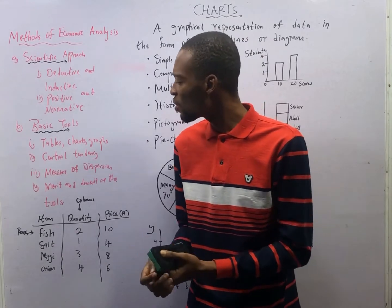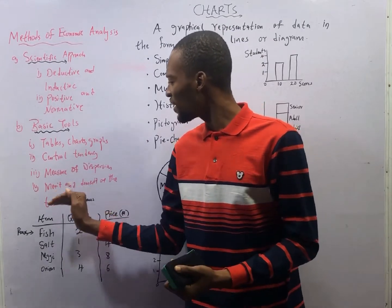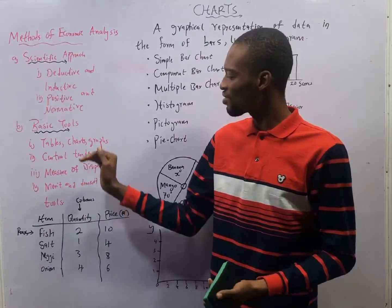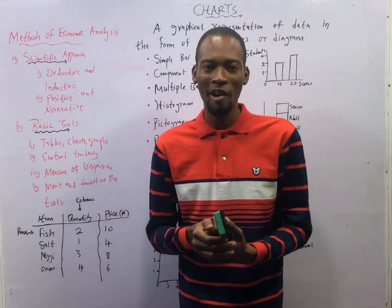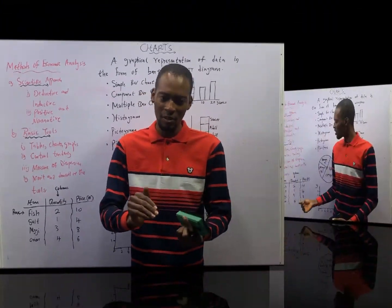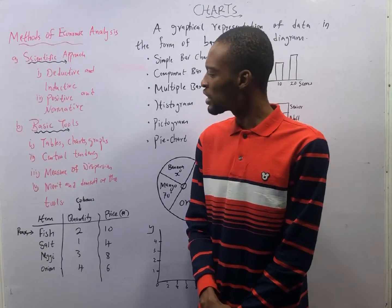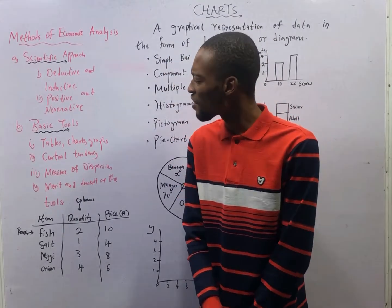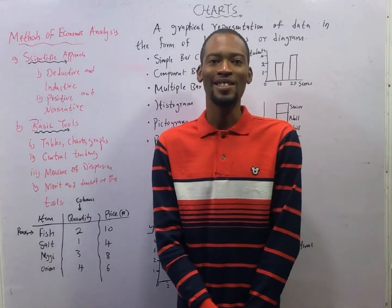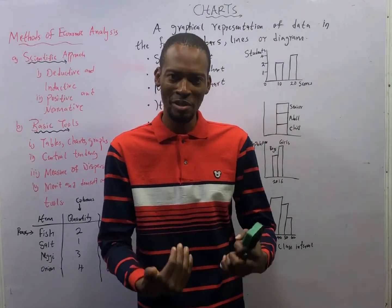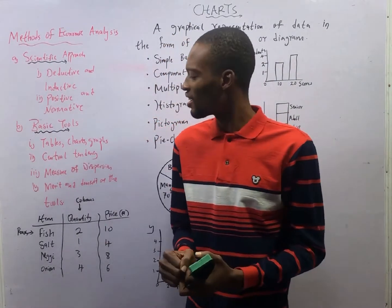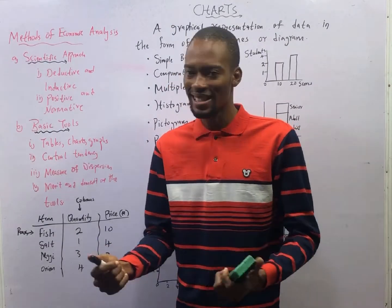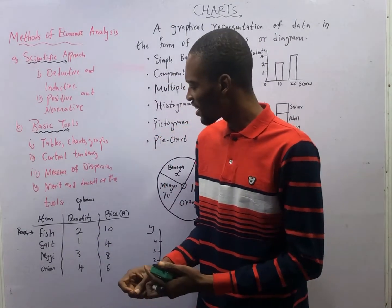We also need to know the advantages and disadvantages of these measures of central tendency and dispersion. Today, we shall be taking a look at charts, tables, and graphs as tools used in economic analysis. What are tables, what are charts, and what are graphs?